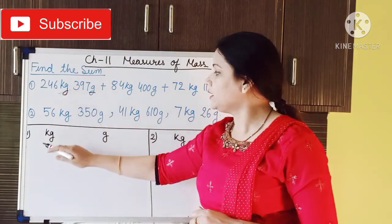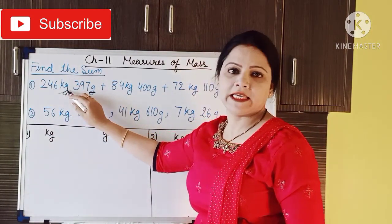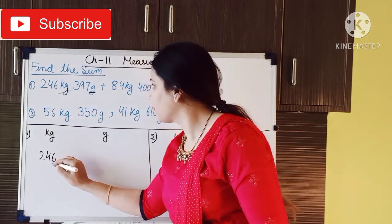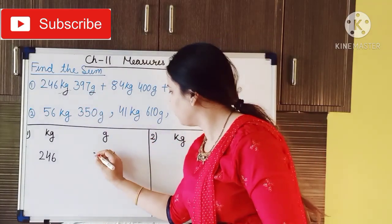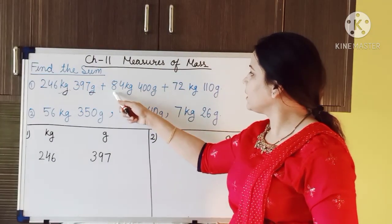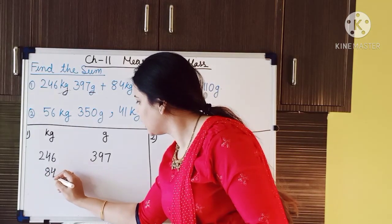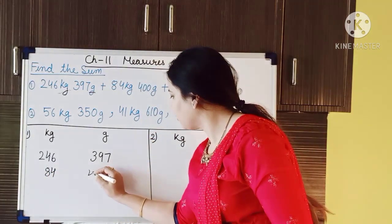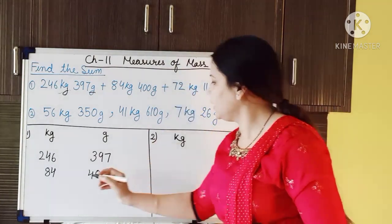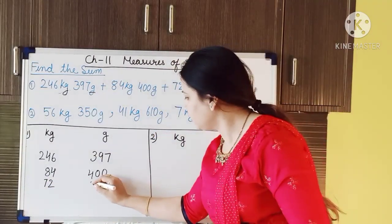Now we have to arrange the numbers accordingly. The first number is 246 kg, so we write 246 under the kilogram column, and 397 gram, so we write 397. The second number is 84 kg, so we write 84, and 400 gram. The last weight is 72 kg, so we write 72, and 110 gram.